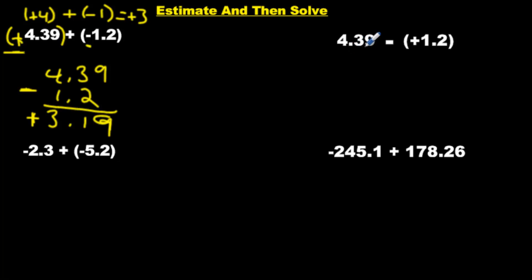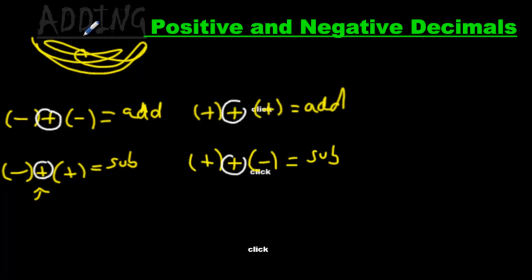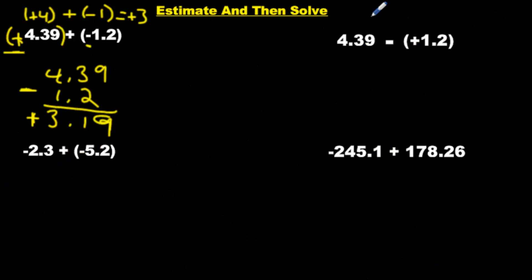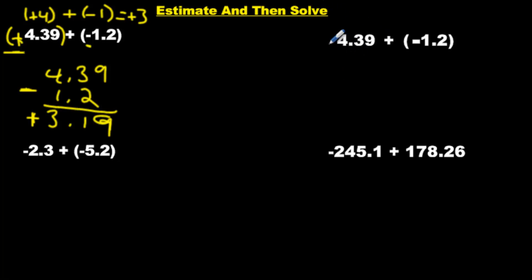Moving on to this: we have 4.39 minus positive — wait a minute, minus. Doesn't this lesson say adding? These tricks only work if you're adding, so what's up with the minus? Here's a trick you can use: take this minus and this plus and switch them. I promise you it doesn't affect the answer, but it puts it in the format we like. Now it looks great — we have a positive and a negative. If you had left it as is, you'd think you just have to add them because the signs look the same, but you can't use these strategies with subtraction. So we have to put it in addition format first.